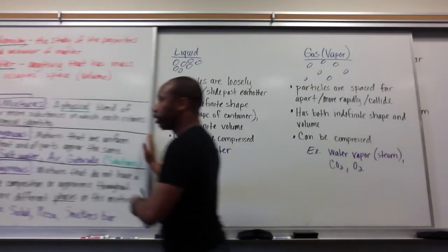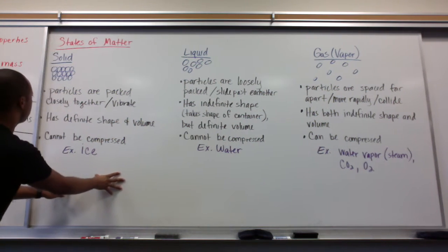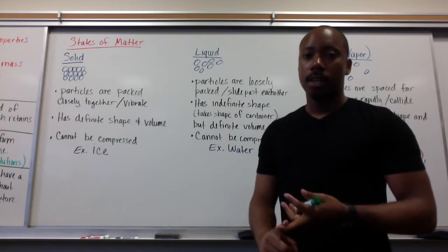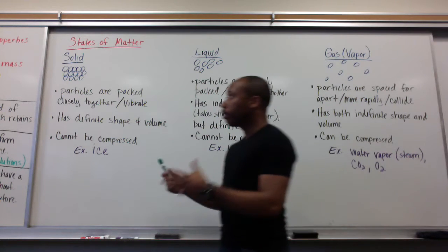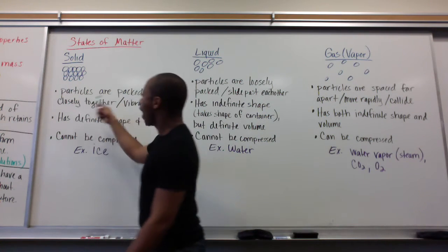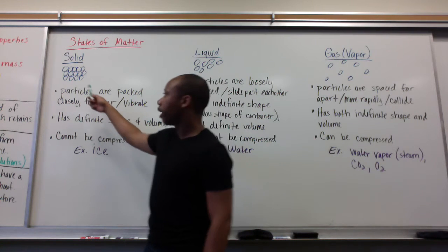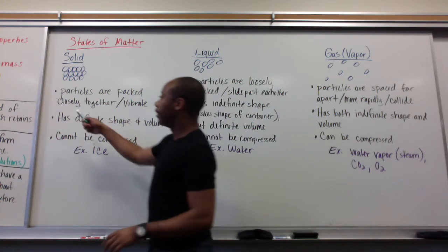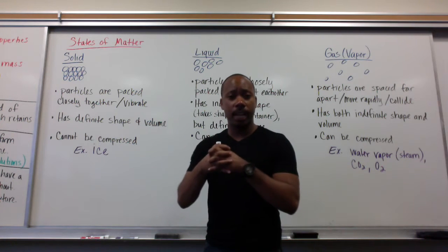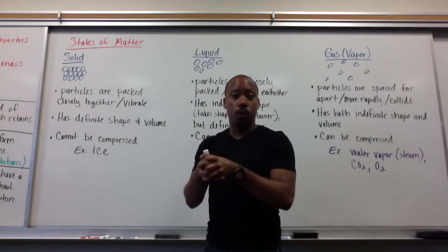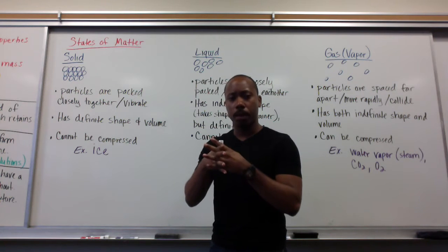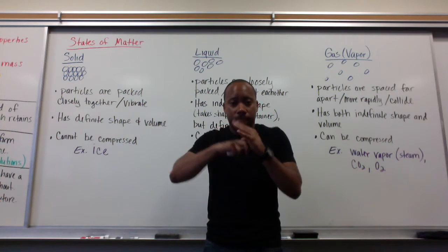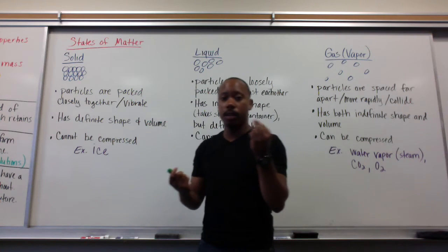Matter comes in different states. The commonly known states of matter are solids, liquids, and gases — there's also plasma, but we'll get to that later. Solids have particles that are packed very tightly together and they vibrate. A solid has a definite shape and volume, meaning you cannot really change the shape or volume it holds, and it cannot be compressed. An example is ice.